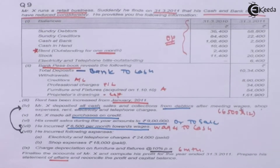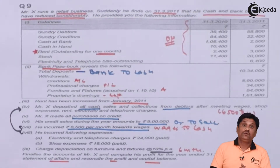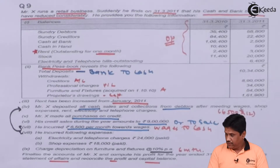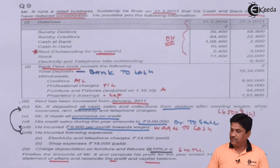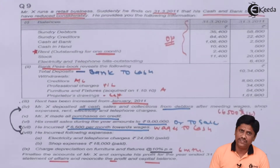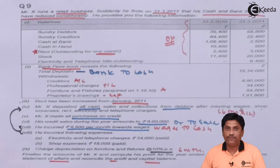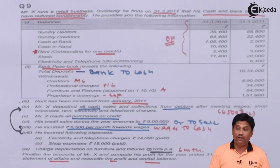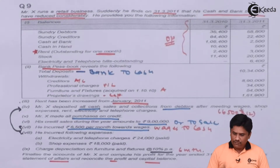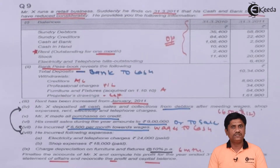They are asking us to finalize the accounts — meaning trading account, P&L account, and balance sheet — and also prepare a statement of affairs and reconcile the profit and capital balances. So the question gives us many things: first, finalize the accounts; next, prepare a statement of affairs using the available information; and finally, reconcile the profit. We will prepare the accounts first in the normal way and then do the reconciliation work.